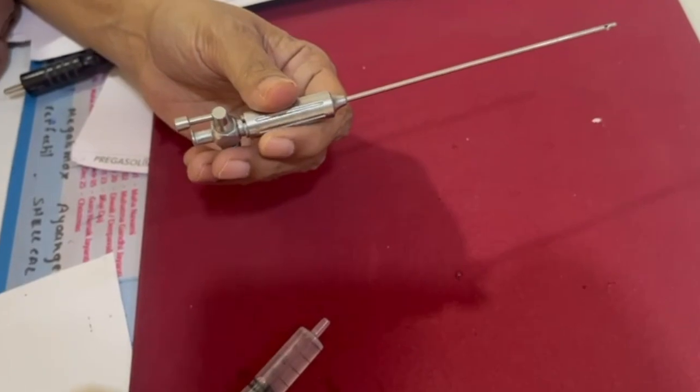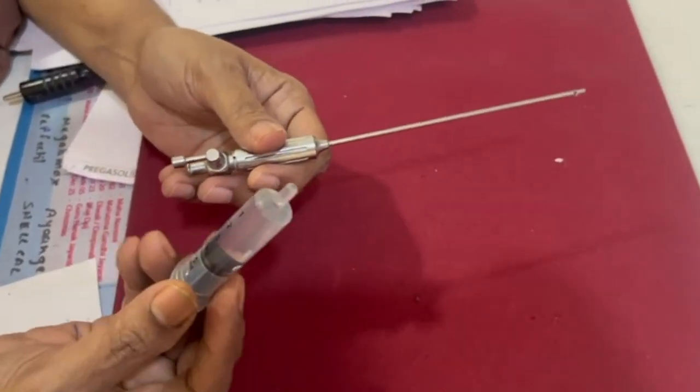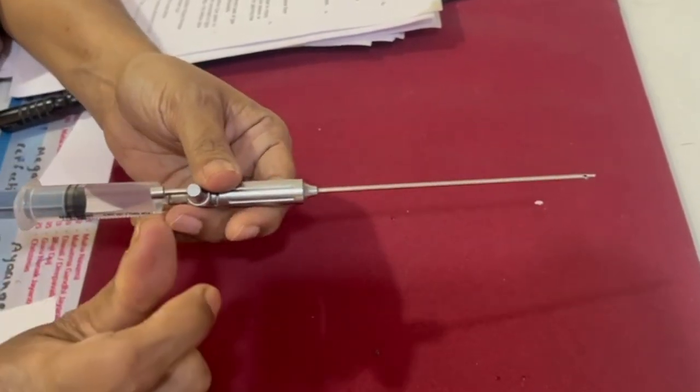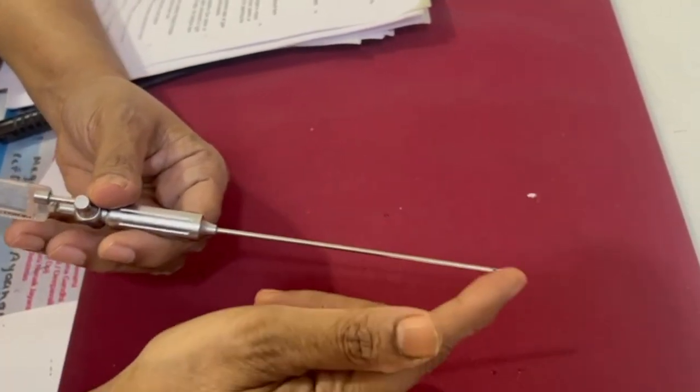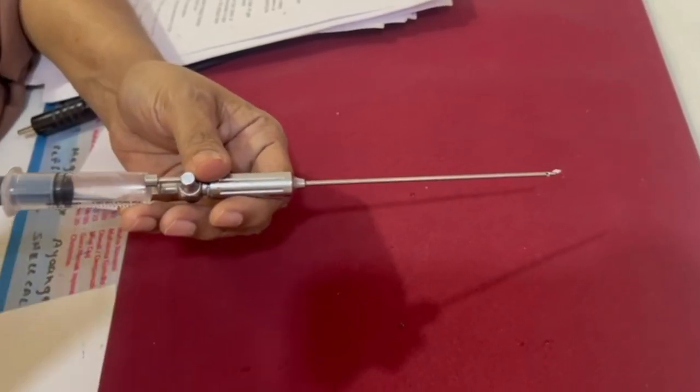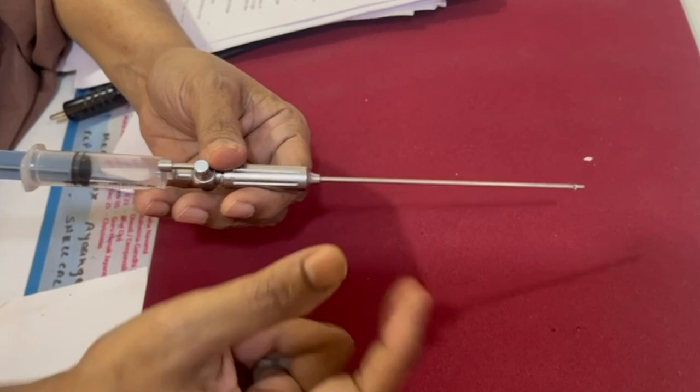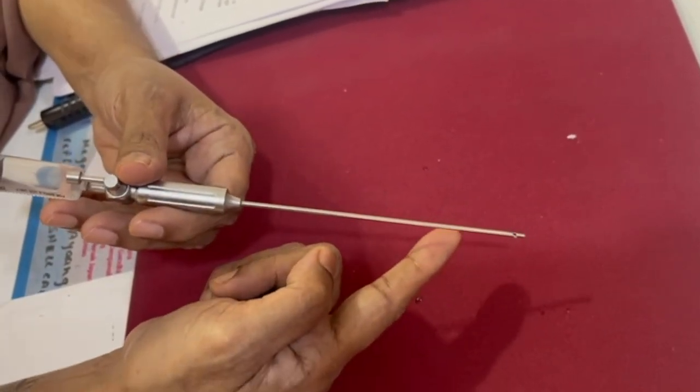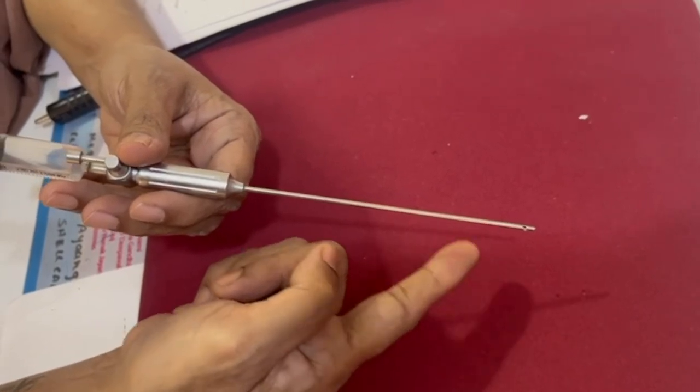Second is the aspiration test. 5 ml of saline is taken and you attach to the hub and you inject it. There will be a free flow of saline, and when you aspirate you will not be able to aspirate if the Veress needle is placed successfully in the peritoneal cavity.